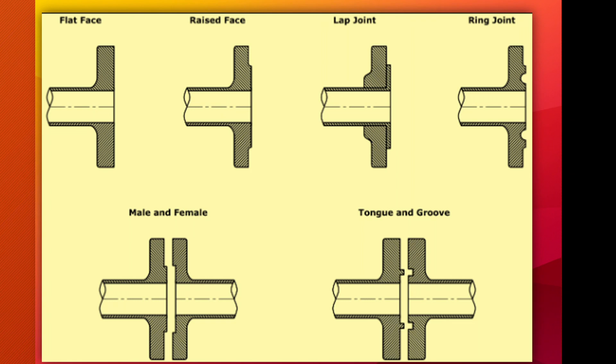We often hear about ANSI and ASME flanges. What is the difference? ANSI flanges are manufactured based on standards developed by organizations, while ASME flanges are based on codes and standards for mechanical devices. ANSI flanges are designed based on approximately 9,500 standards, whereas ASME flanges are manufactured on 600 codes and standards for different mechanical devices.